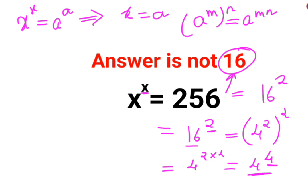Now this is in the form of base and index being same. And here also we have x raised to x. So therefore, the value for x for this particular question is 4.